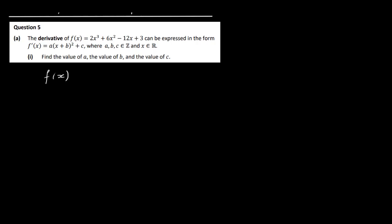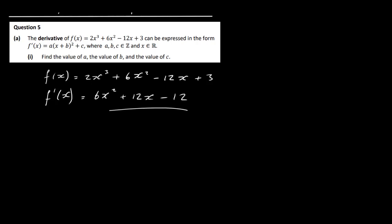Let's do the derivative first. f of x is equal to 2x cubed plus 6x squared minus 12x plus 3, so f prime of x is equal to 6x squared plus 12x minus 12. This is our quadratic expression. To convert it to completed square form, the first thing I need to do is factorise out the 6, which gives us x squared plus 2x minus 2 inside the bracket.